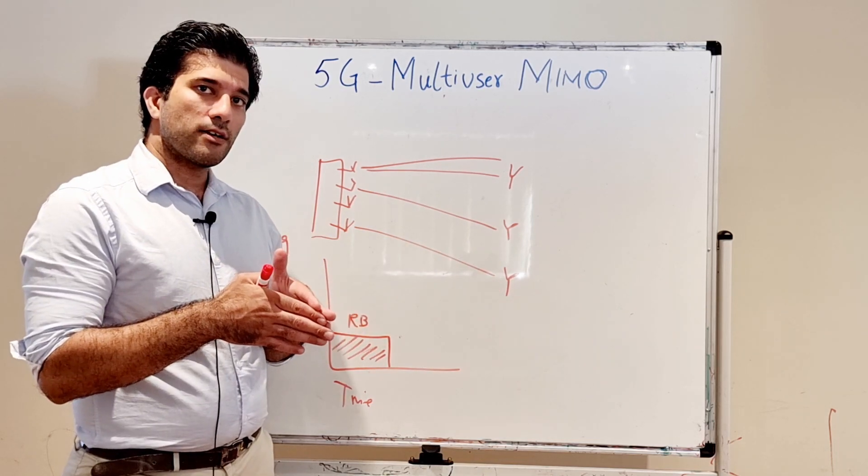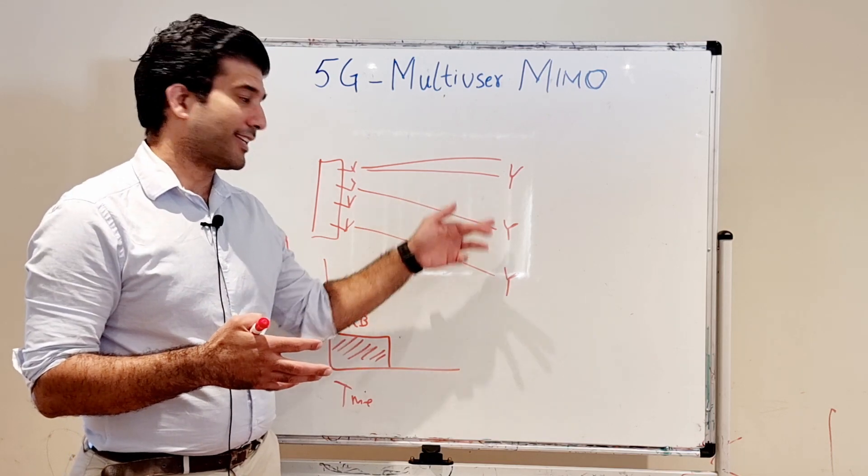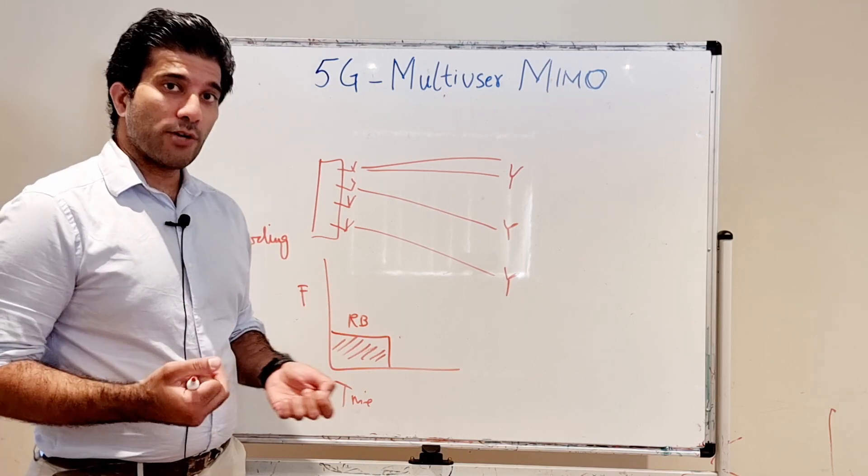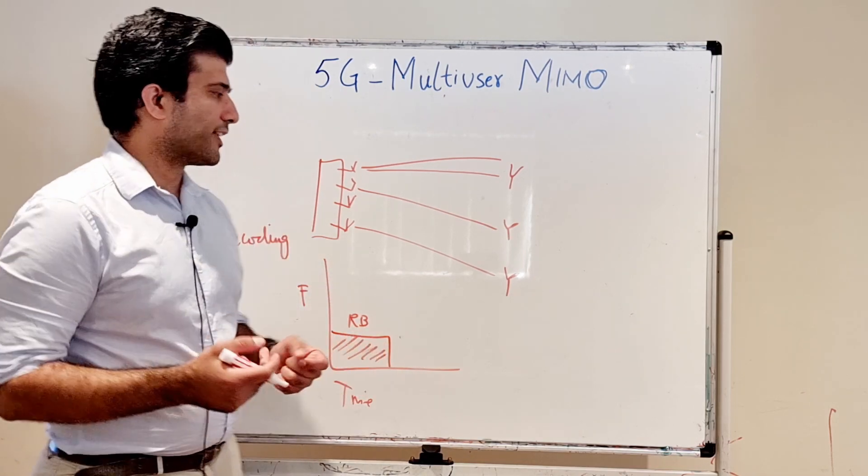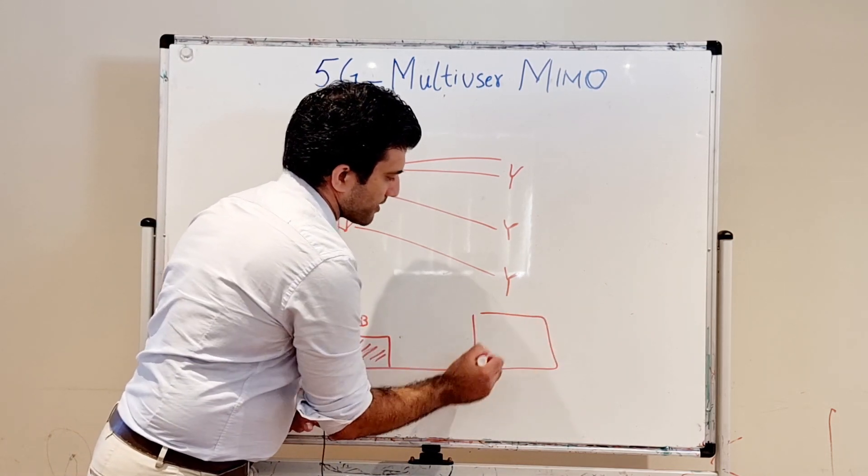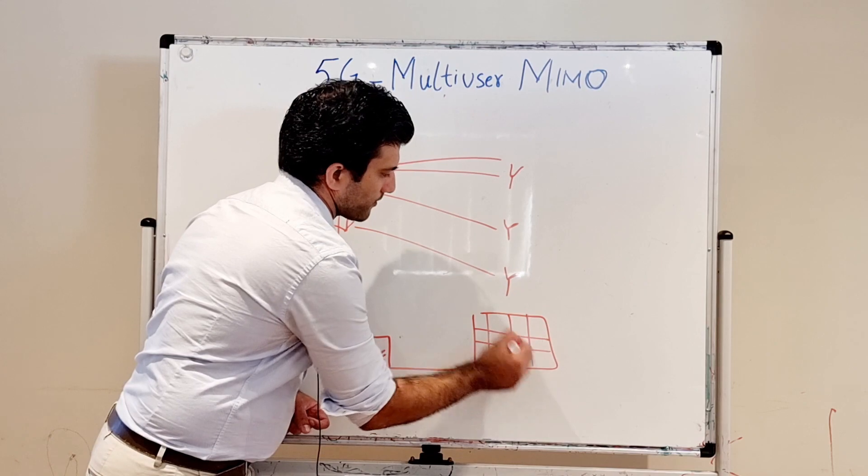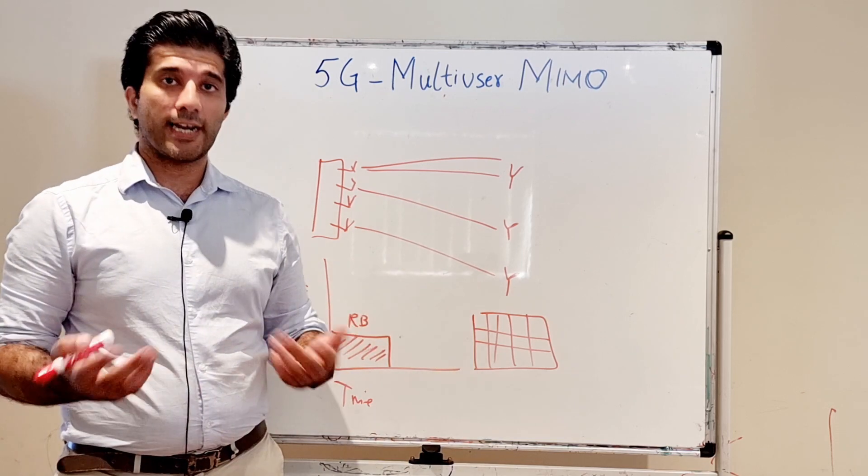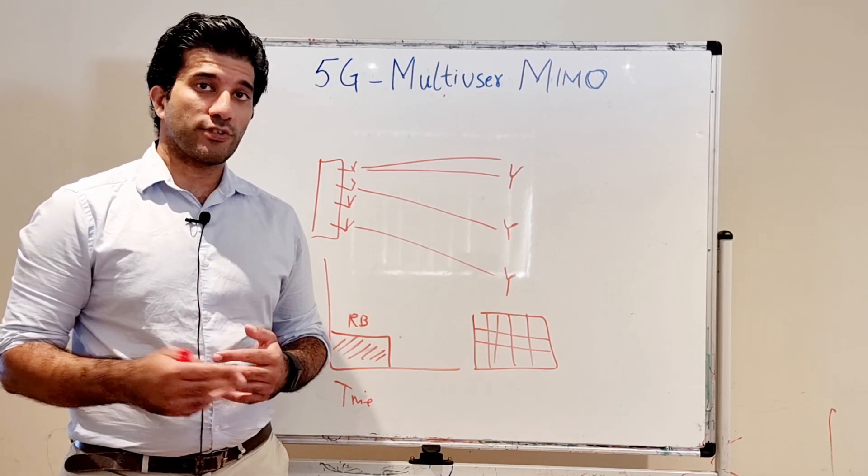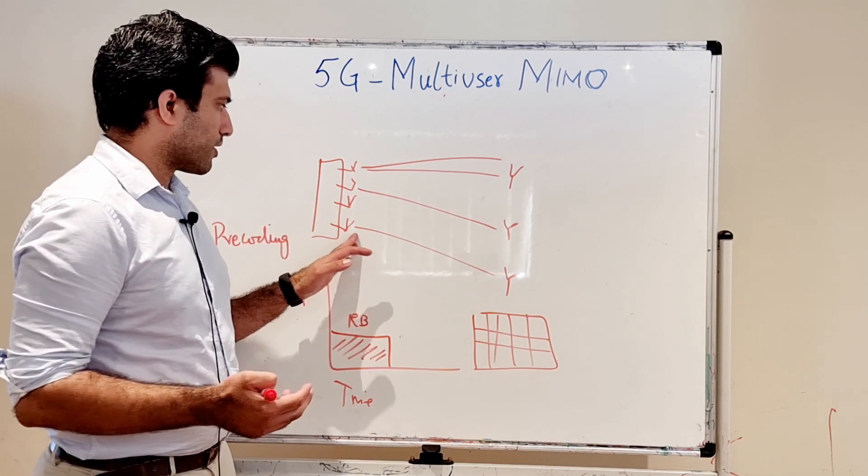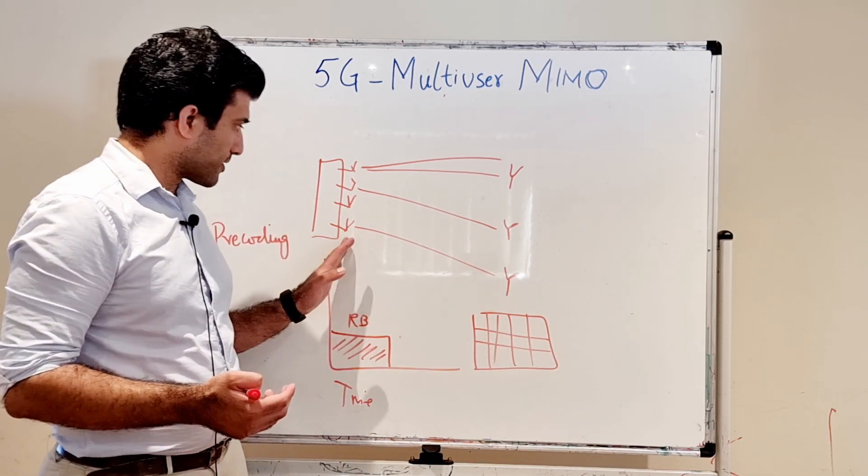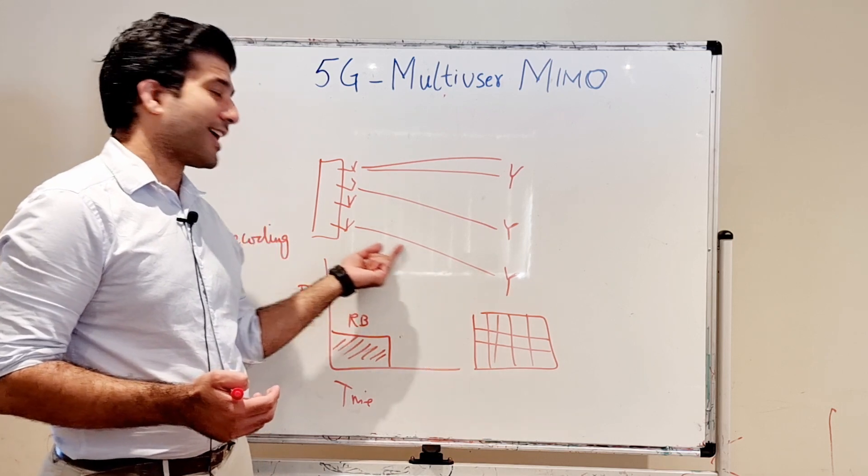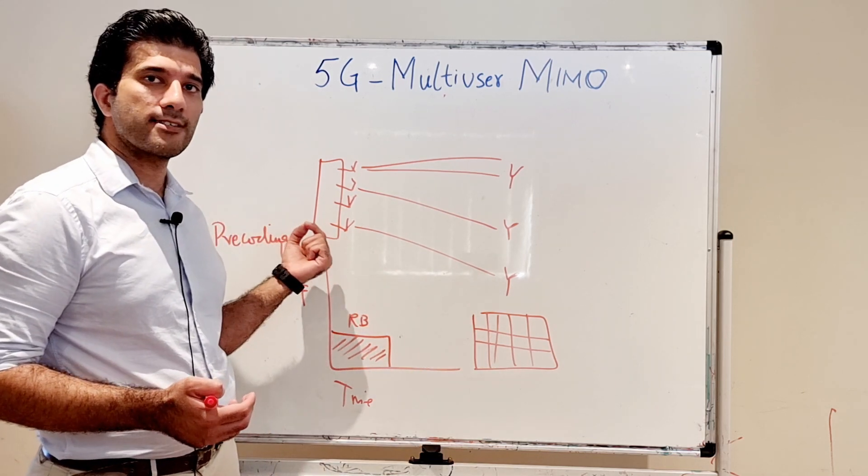How that is achieved is using the precoding matrix. A precoding matrix, you might have heard in 3GPP specifications, is kind of a channel estimation matrix. For example, in TDD, the majority of these functionalities are in TDD because we need to use channel reciprocity. When this base station transmits to this user, this user basically estimates the channel and sends the estimate back to the BTS.